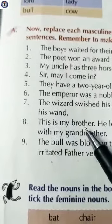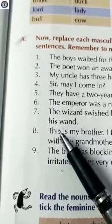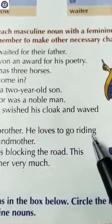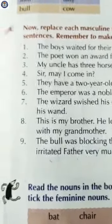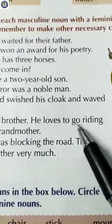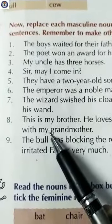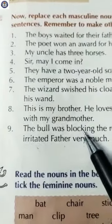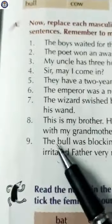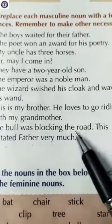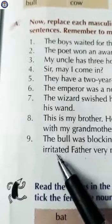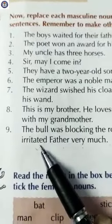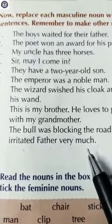Number eight: 'This is my brother.' Answer: 'This is my sister. She loves to go riding with my grandmother.' Number nine: 'The bull was blocking the road. This irritated father very much.' Answer: 'The cow was blocking the road. This irritated mother very much.' Okay, thank you.